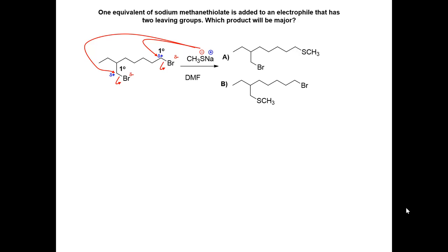The electrophilic centers are both primary. The difference is the branching on the beta carbon.